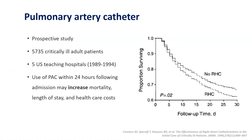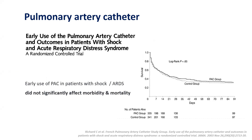In one of the earliest multicentric trials conducted in critically ill adult patients, use of the pulmonary artery catheter within 24 hours following admission was found to increase mortality, length of stay, and healthcare cost. This was followed by another study from the French group, which suggested that early use of the pulmonary artery catheter did not significantly affect morbidity and mortality in patients with shock or ARDS.